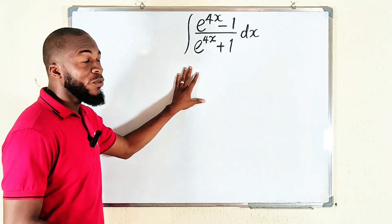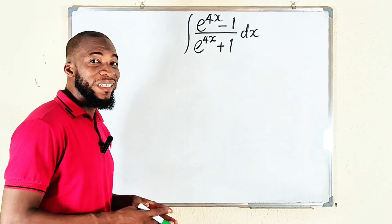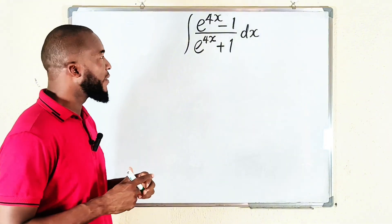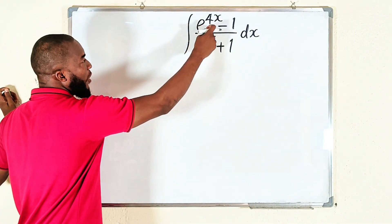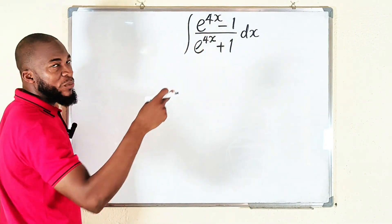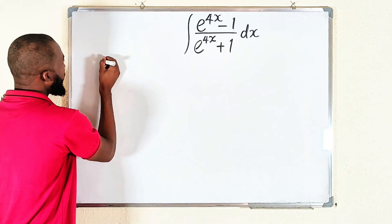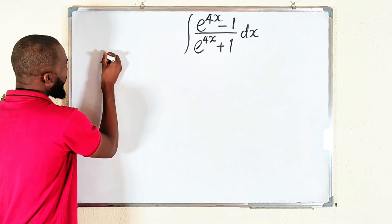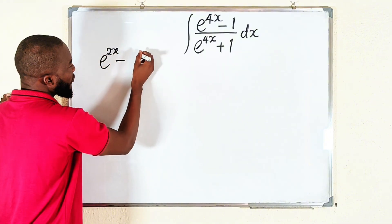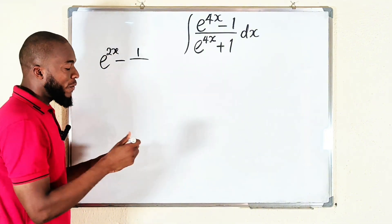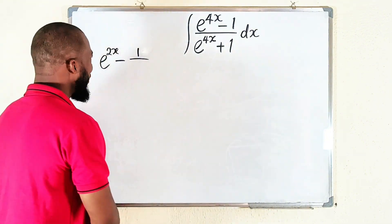The first thing I would like to do here is to divide the top and the bottom by e to the power of 2x. So we have e^(4x) divided by e^(2x), which gives us e^(2x). So the top becomes e^(2x) minus 1 divided by e^(2x), which is simply e^(-2x).